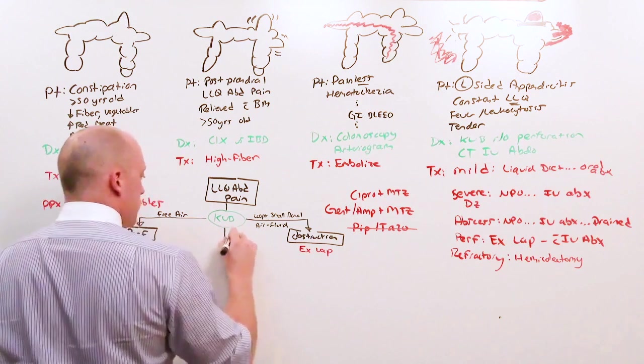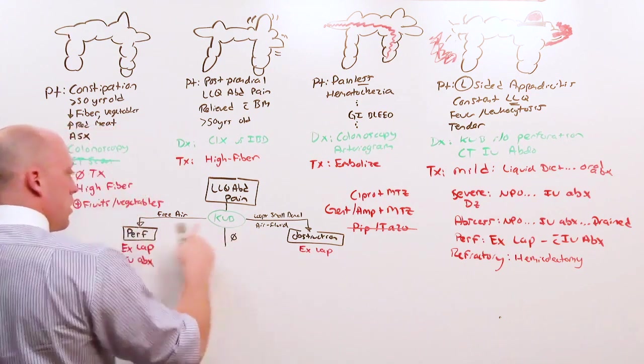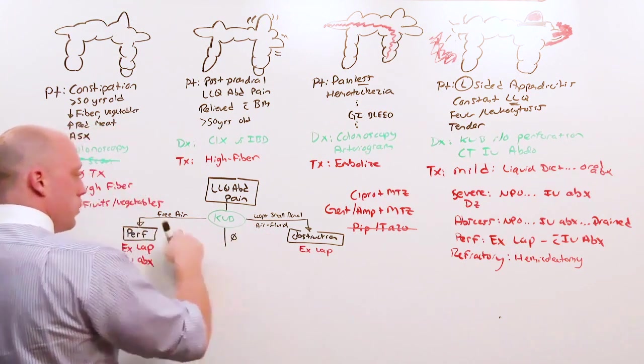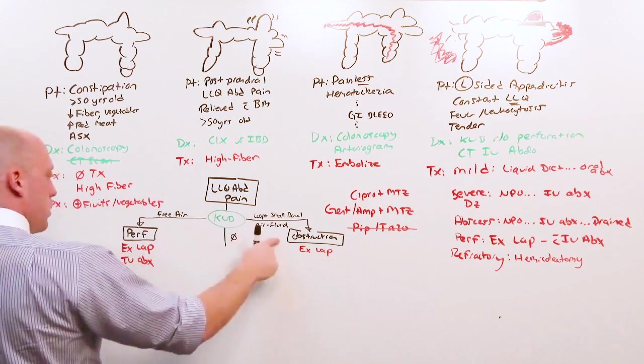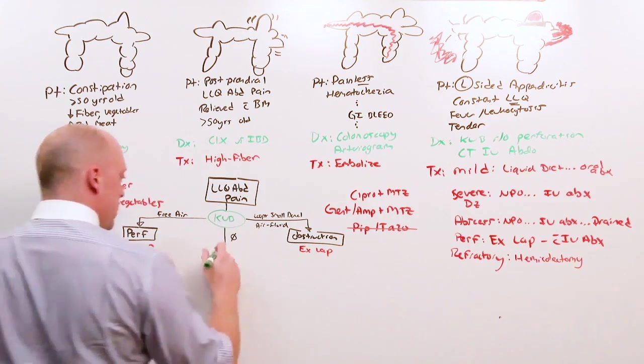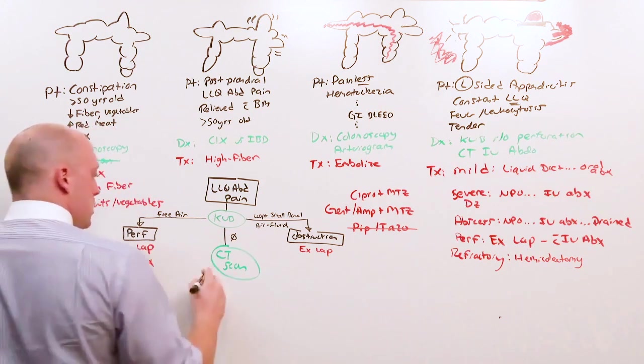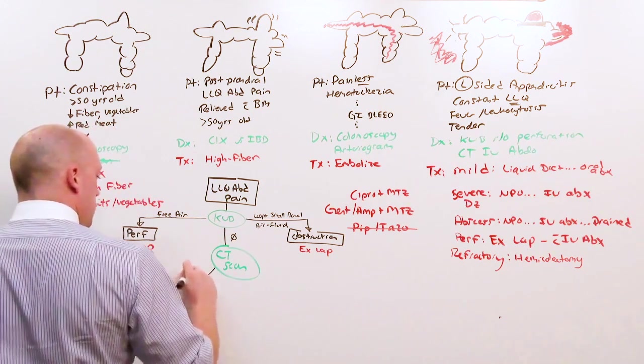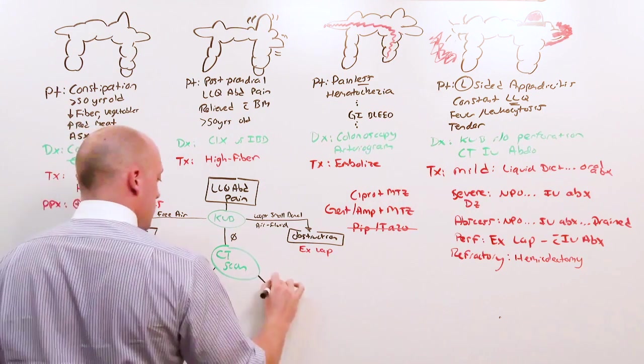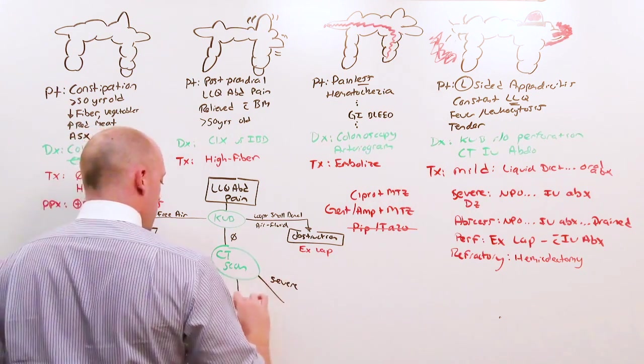But if what you see is nothing, neither free air nor loops of small bowel - that's all the KUB is good for, perforation and obstruction - then you get the CT scan. The CT scan of the abdomen with IV contrast is going to separate it out into mild, severe, and abscess.